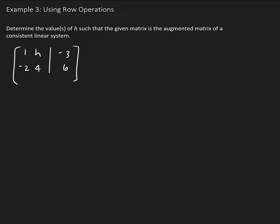So that is a row operation. Again, we're going to take 2 times row 1, add it to row 2 and store that result in row 2. So we're going to get 1, H, minus 3 for the first row.